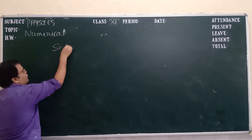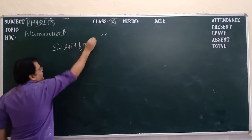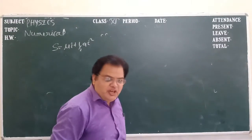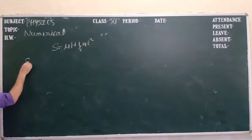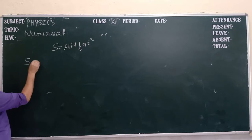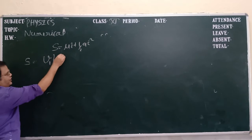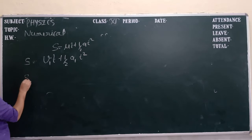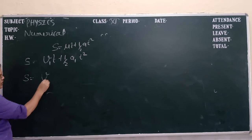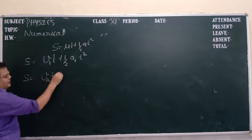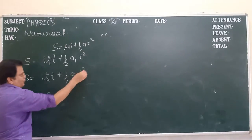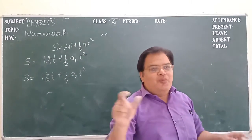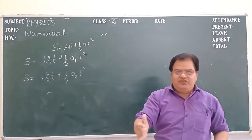Remember the formula s equal to ut plus half at square. Both the cars reach at the same time at the finish point. Suppose the distance will be same for both the cars, so s equal to velocity v1t plus half a1t square.